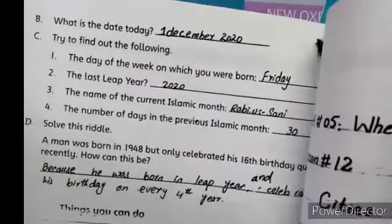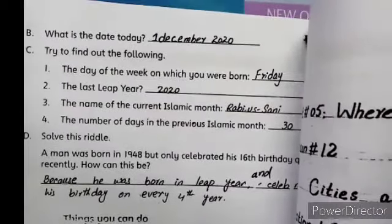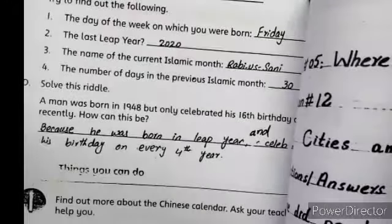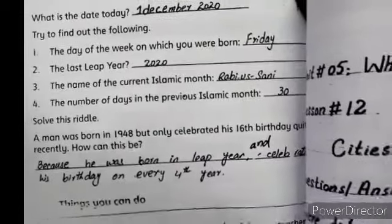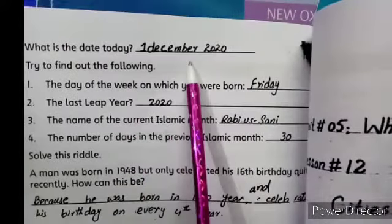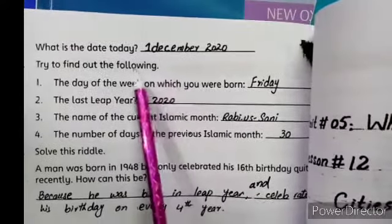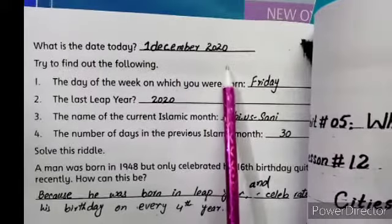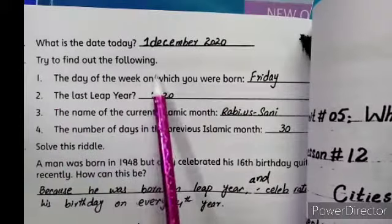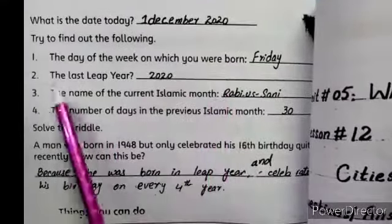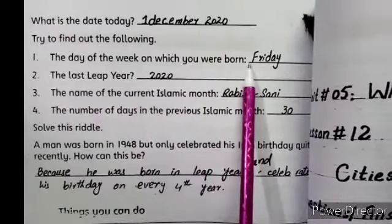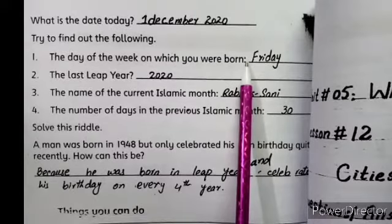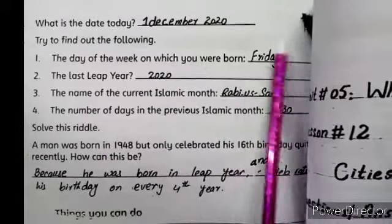Next question: what is the date today? You will write today's date here. For example, when these notes were made, the date was 1st December 2020. Try to find the following: the day of the week on which you were born - write that day here.